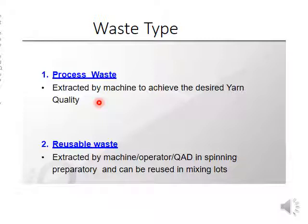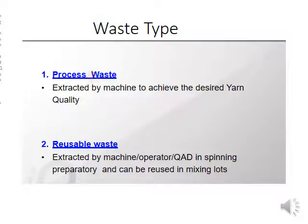There may be another classification: usable waste or non-usable waste. Reusable waste is waste which is again processed in the same manufacturing process. Non-usable waste means it has to be sold somewhere.